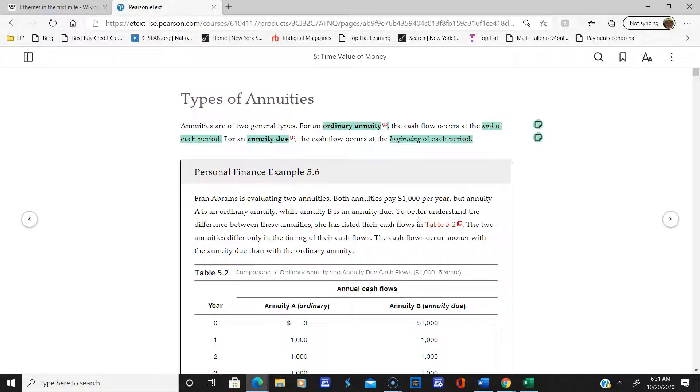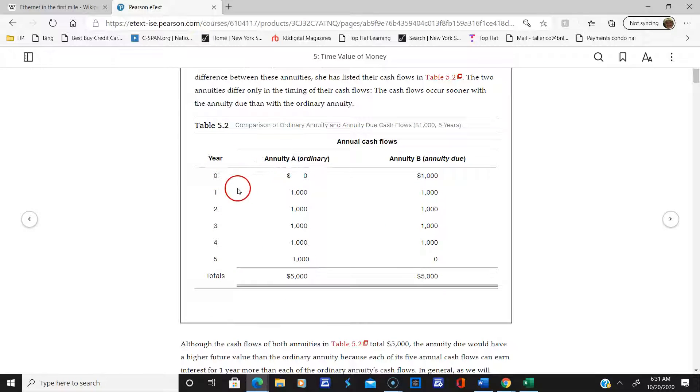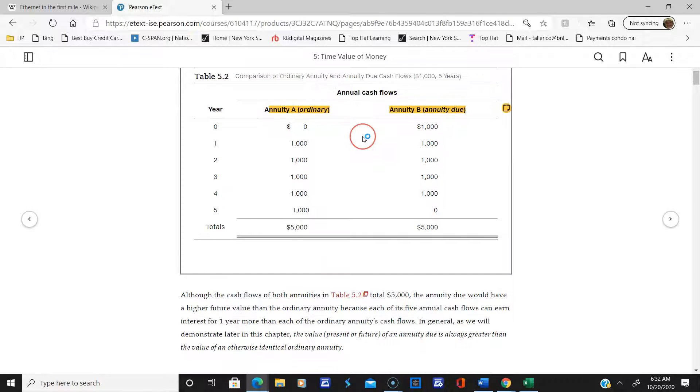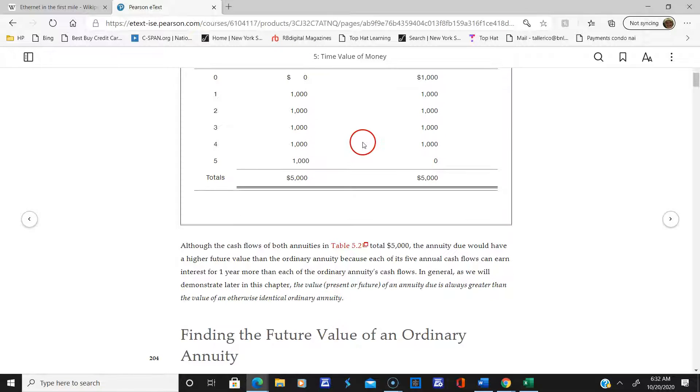Here's an example of Fran Abrams where you can clearly see the difference. The ordinary annuity - you're putting it in at the end of year one. This is the beginning of year one, even though it's year zero. And this is the beginning of year one for the annuity due. This would be January 1st, 2000, and this would be December 31st, 2000. It's all a matter of timing with regard to these two types.